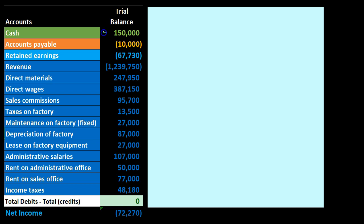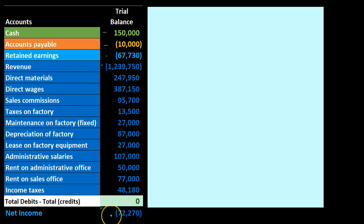In this very simplified trial balance, we have cash and accounts payable on the balance sheet — assets and liabilities — then retained earnings, and then the income statement items: revenue, direct materials, direct wages, sales commission, taxes, maintenance, depreciation, and so on. Revenue minus the expenses gives us net income of 72,270. Revenue as a credit is shown in brackets; expenses as debits are shown without brackets. The credit balance of 72,270 is a net income, not a loss. All debits and credits add up to zero.